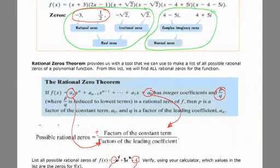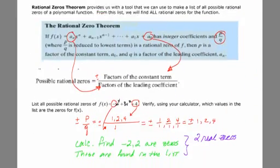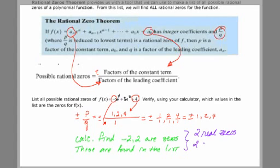So I could make a statement here that I have two real zeros and two complex imaginary zeros. These can't be found on a calculator. The real ones can be found on the calculator.